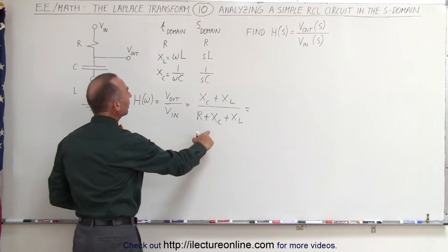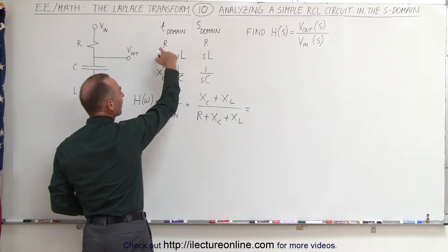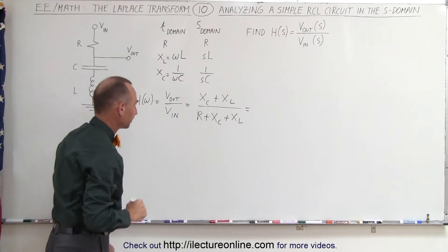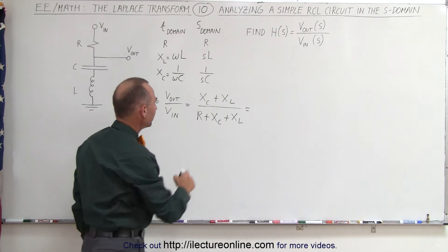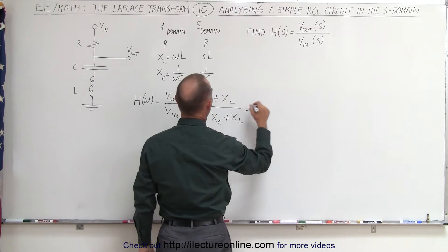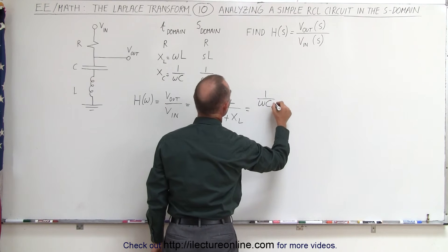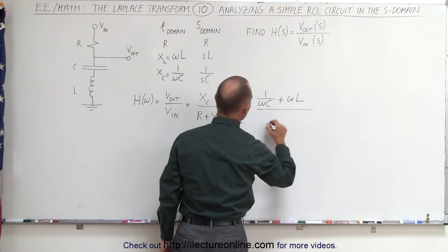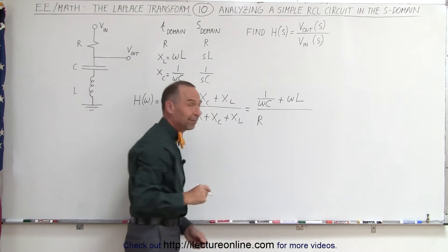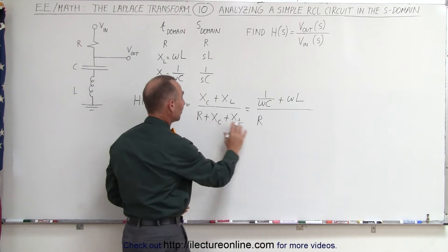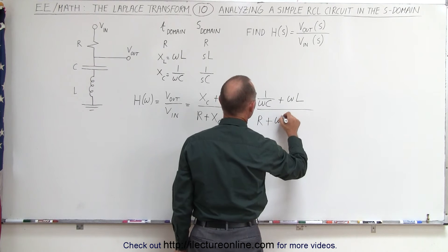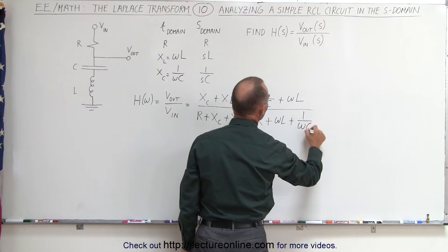And then if we write in what those are equal to in the time domain, and here I have a list of what they are in the time domain versus the S domain, which is the frequency domain, we can write X sub C as 1 over Omega C plus Omega times L divided by R. Because R is not affected by the frequency, R is simply R in the S domain, plus Omega L plus 1 over Omega C.